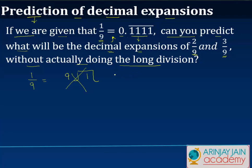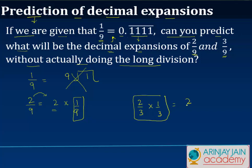So if I look at 2 upon 9, I can write it as 2 into 1 upon 9. I have written it this way — rather than, say, 2 upon 3 into 1 upon 3 — because I already know the value of 1 upon 9, which is 0.1111. So I can write this as 2 times 0.1111, which gives us 0.2222 with a bar over it.